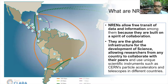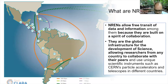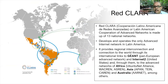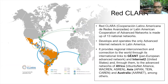These networks allow free transit of data and information because they are built on a spirit of collaboration. They are also the global infrastructure for the development of science, allowing researchers from any country to collaborate with their peers. Red Clara, which is a Latin American cooperation of advanced networks, is made up of 13 national networks. It develops and operates the only advanced internet network in Latin America, and also provides regional interconnection and connection to the world through its international links to GEANT, a pan-European advanced network, Internet2 from the United States, and through them to the advanced networks of Africa, Asia, and Australia.